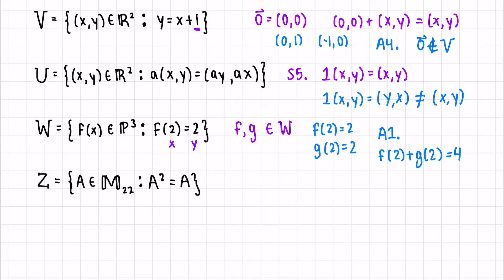Now because these are functions, we can combine f plus g of 2. And this new function, f plus g, equals 4. So f plus g at the point 2 does not equal 2. Therefore, the function f plus g is not included in the set W. So it is not a vector space.